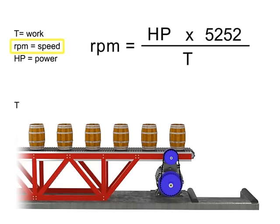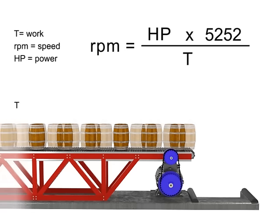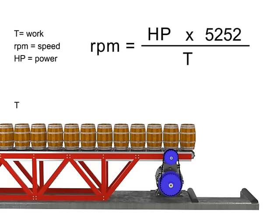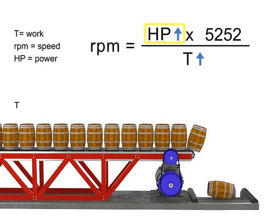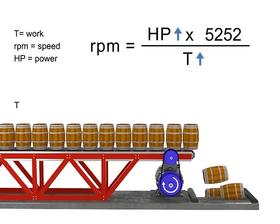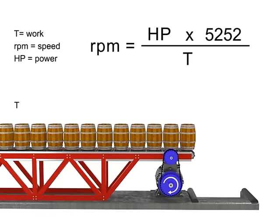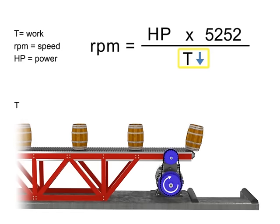If speed remains constant, then torque and horsepower are proportional. As the torque increases, horsepower also increases to maintain constant speed. As the torque decreases, horsepower also decreases to maintain constant RPM. Let's say we want production to increase but the speed of the conveyor to remain constant. If torque increases, horsepower also increases to compensate — this means a more powerful motor is needed to produce more torque at the same speed. Similarly, if we wish speed to remain constant and decrease torque, then horsepower also decreases.